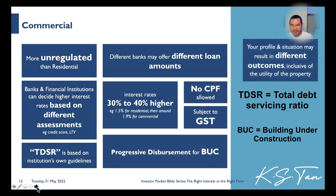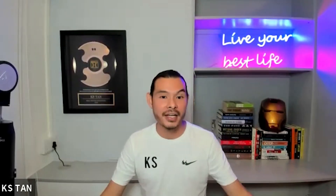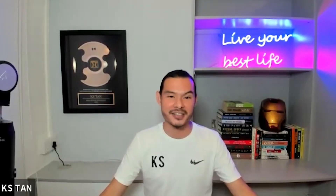Your profile and situation may result in different outcomes, inclusive of the utility of the property. To give you an example of a very interesting event that happened over the weekend — I was celebrating my youngest boy's second birthday and we were at DG Phil, which is at Serangoon Gardens. We came across a cafe that sells Mongolian food, and their marketing, their pictorial where they showcased the chef's dishes, were so beautiful.